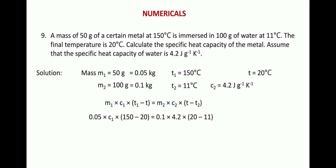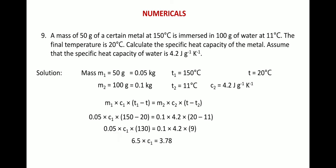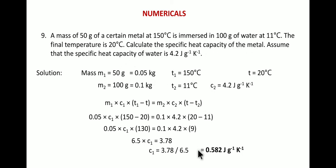Substituting values: C1 is the only unknown. T1 − T = 150 − 20 = 130, and T − T2 = 20 − 11 = 9. Multiplying: 130 × 0.05 = 6.5, so 6.5 × C1 = 4.2 × 0.1 × 9 = 3.78. Therefore C1 = 3.78 ÷ 6.5 ≈ 0.582 joules per gram per Kelvin. This is the specific heat capacity of the metal.